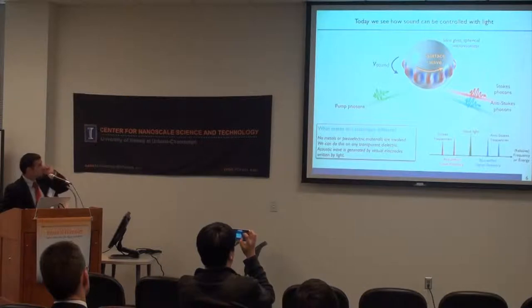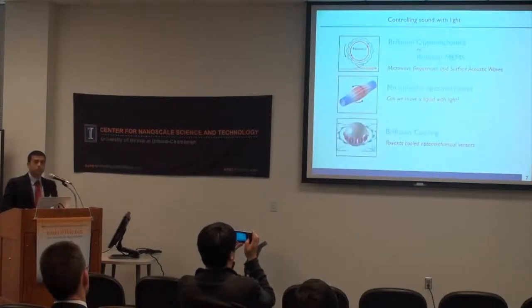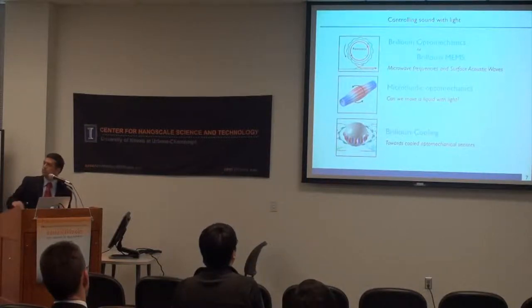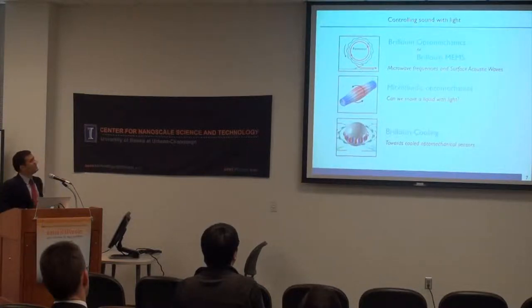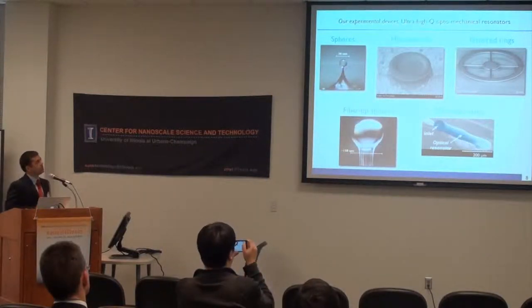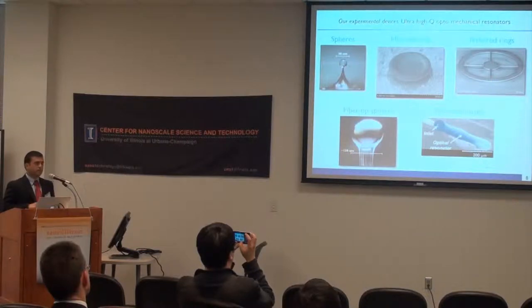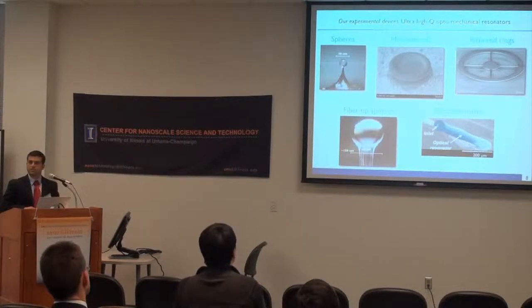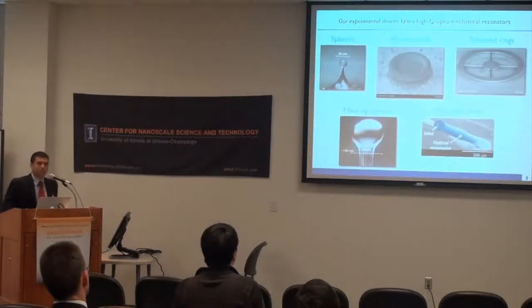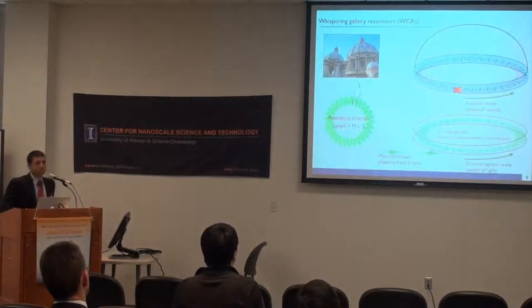So today, we're going to talk about how sound can be controlled with light. The experimental devices that my group works with are ultra-high-Q optomechanical resonators. These are basically, so far, we've been working with silica, but a lot of people also work in silicon nitride as well. They are released optical resonators, so they are free to vibrate mechanically as well. They come in a variety of shapes. The overarching theme, if you'll notice, is that all of them are somewhat circular devices. They are all basically whispering-gallery micro-resonators.